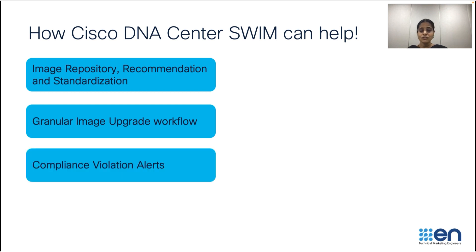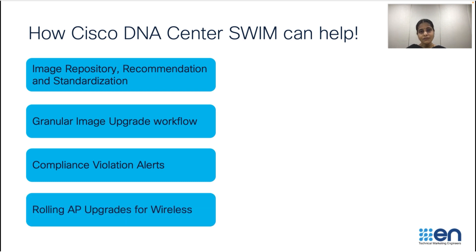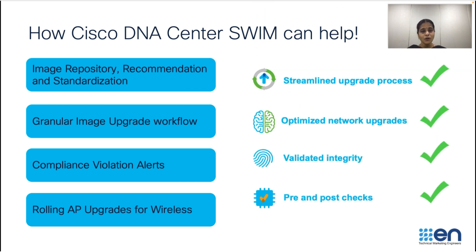DNA Center doesn't stop at image standardization — it regularly monitors your network for compliance with the standardized image and raises a violation if it finds a deviation. The rolling AP upgrade feature helps you upgrade your wireless networks with almost zero downtime. DNA Center also performs integrity checks to ensure software images used for upgrades are not tampered with, and supports pre and post validation checks to ensure network integrity throughout the upgrade process.